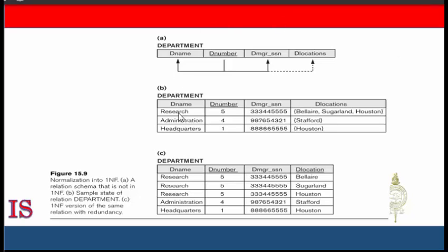Alternatively, the domain of D_Locations contains sets of values and is therefore non-atomic, in which case D_Number does determine D_Locations because each set is considered a single member of the attribute domain. In either case, the department relation shown in this figure is not in first normal form — in fact it doesn't even qualify as a relation according to our definition.